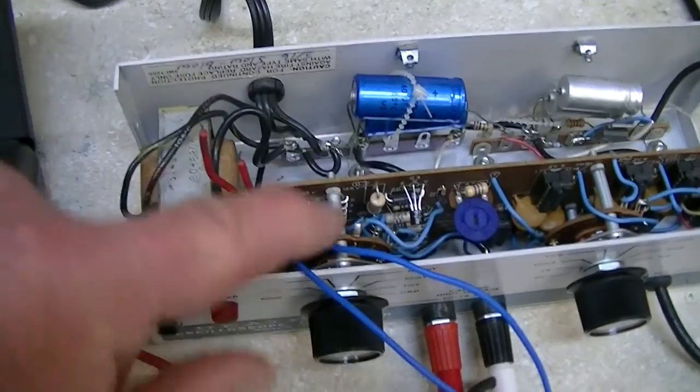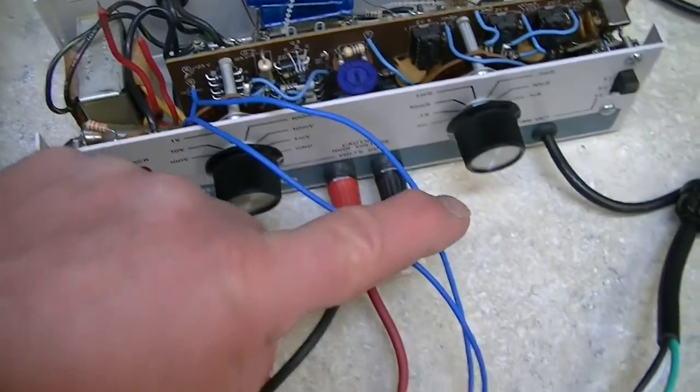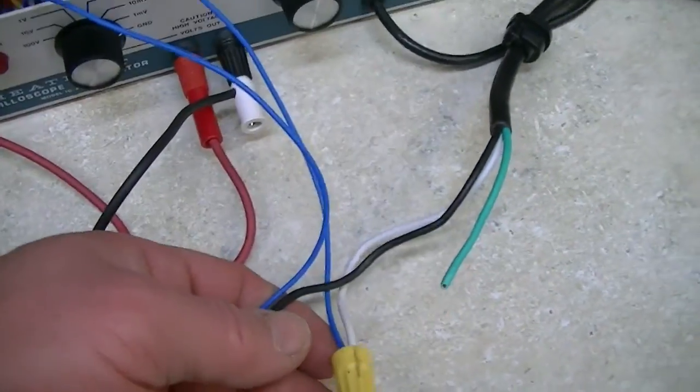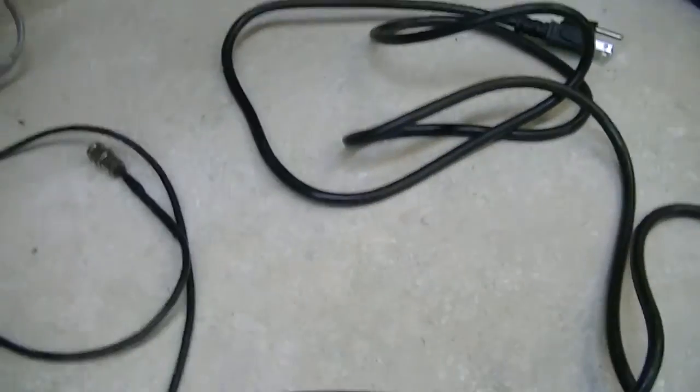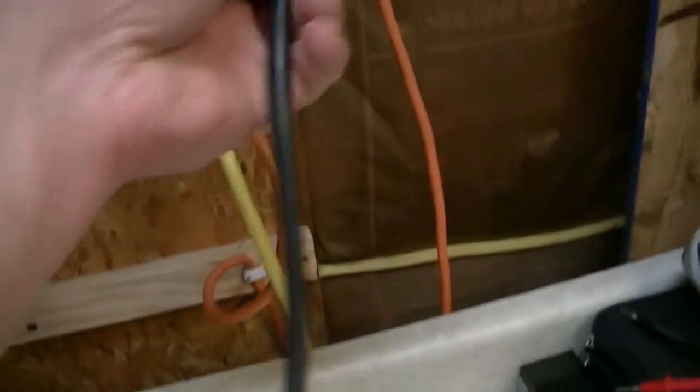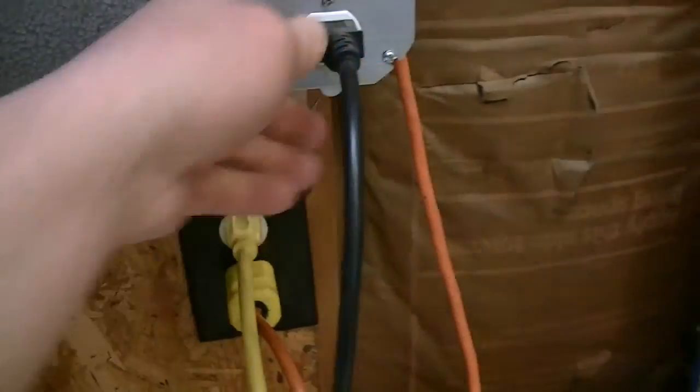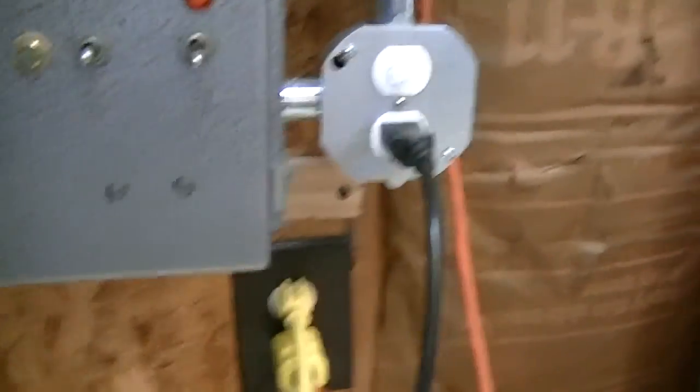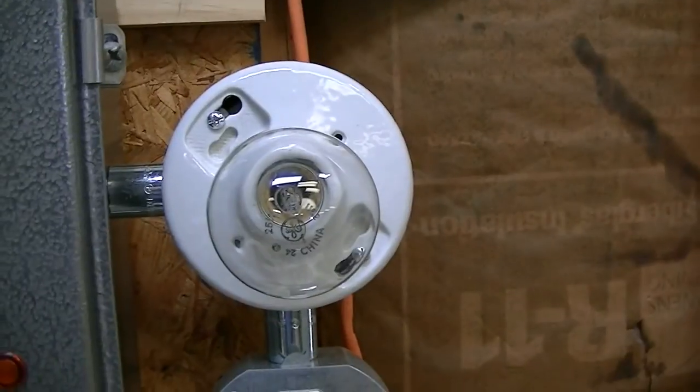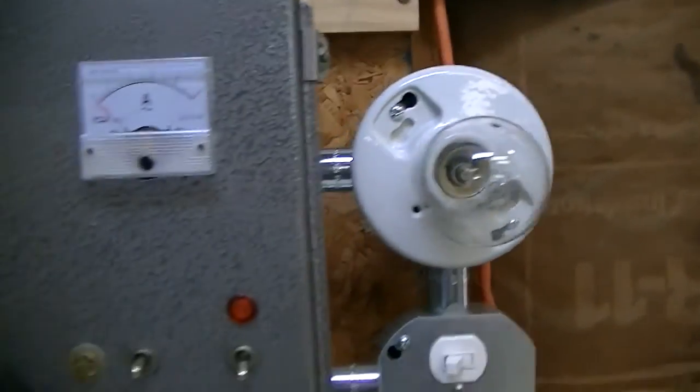So I plugged the regular cord in, desoldered these leads, soldered two wires into place, connected them to a cord. Now this cord plugs into the dim bulb tester. I have that off now. I put a 25 watt bulb in there which is the smallest bulb that I have.